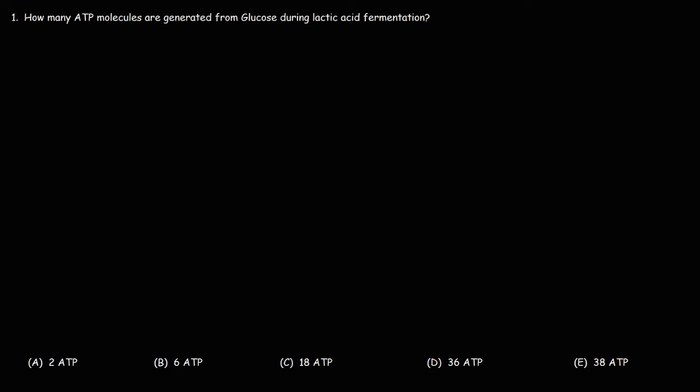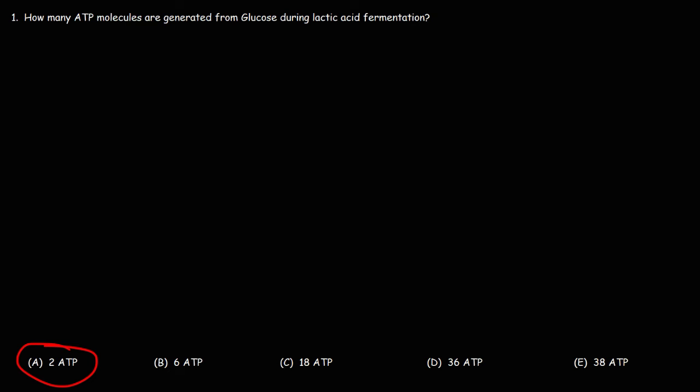Now let's work on some review questions. Number one: how many ATP molecules are generated from glucose during lactic acid fermentation? Is it 2, 6, 18, 36, or 38? The answer is two. Both during lactic acid fermentation and ethanol fermentation, two molecules of ATP are produced. In aerobic cellular respiration, the maximum is 38 according to some textbooks, or 36 if you account for the two ATP molecules needed to transport pyruvate into the mitochondria. But during lactic acid fermentation, the answer is two.